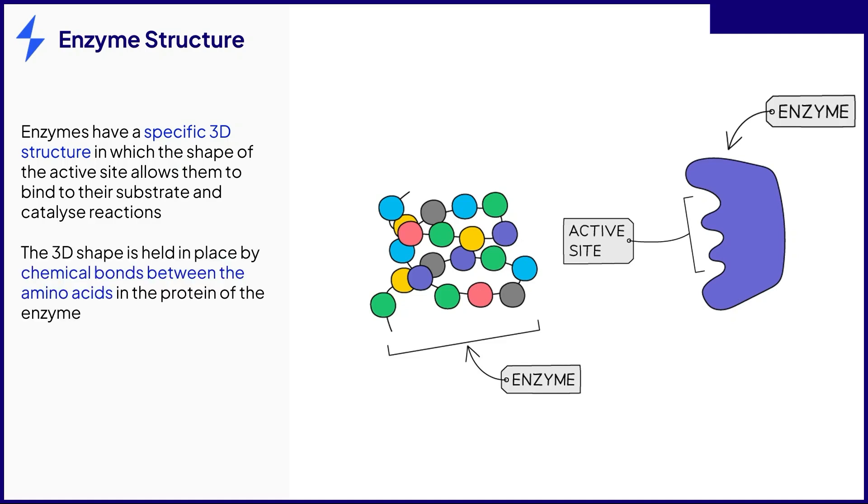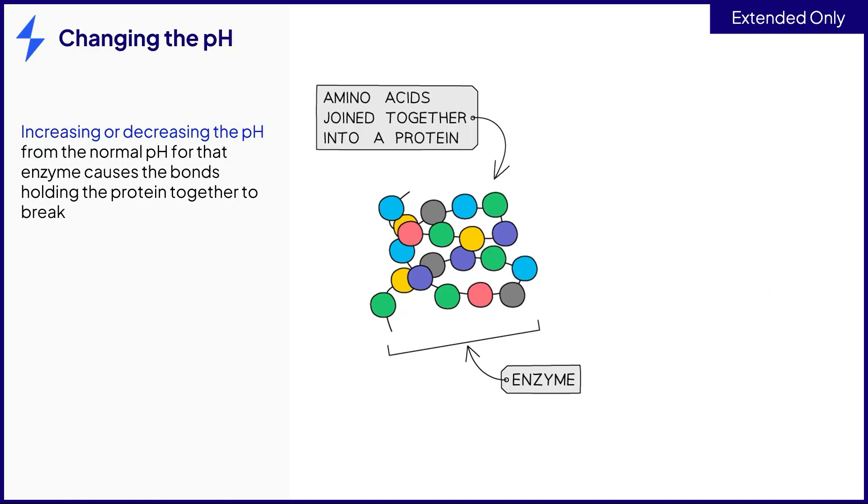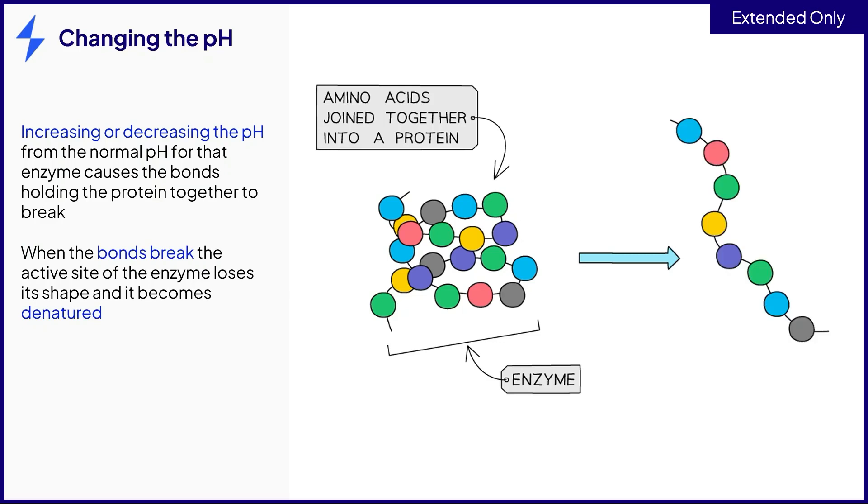This structure is held in place by chemical bonds between the amino acids in the protein of the enzyme. The bonds holding together the amino acids in the enzyme are specially adapted to withstand specific pH conditions. When the pH changes to be much higher or lower than this, the bonds between the amino acids can break.